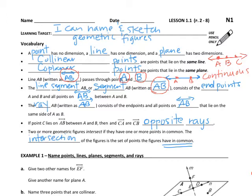A segment consists of those two endpoints. The ray AB, written with just one headed arrow, consists of the endpoint and all points on line AB that lie on the same side of A as B. So if this was A, we're talking about all the points along this line on the same side of A as B.